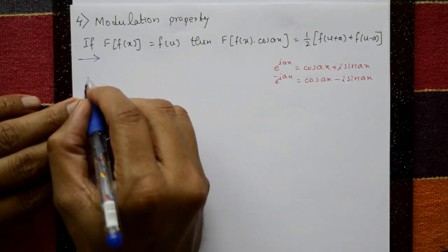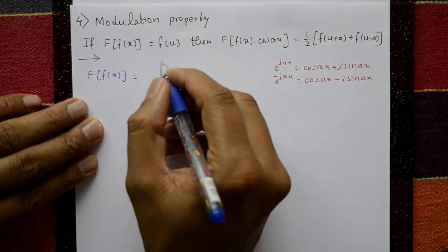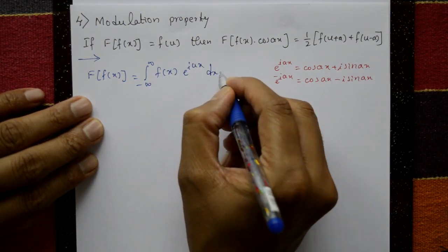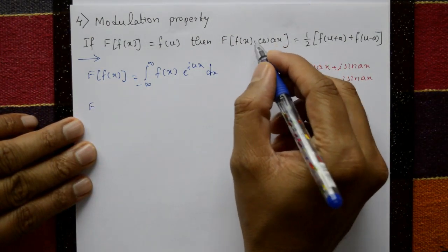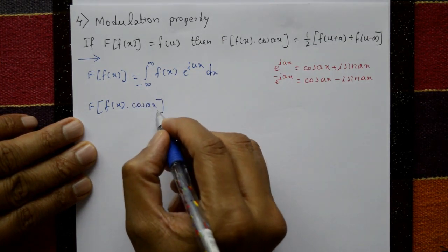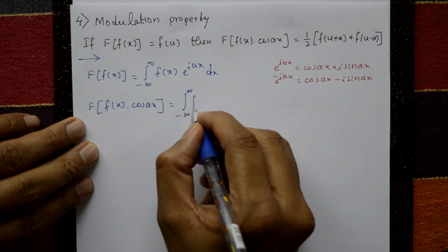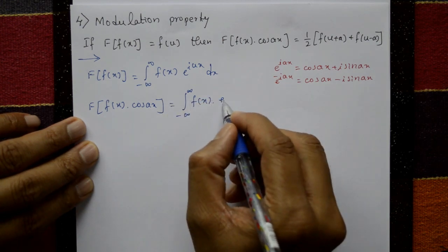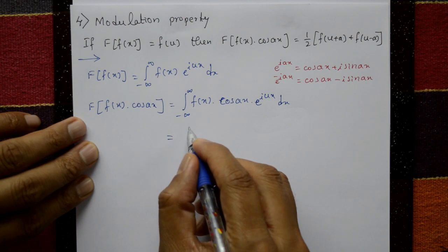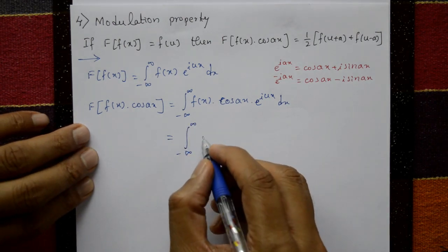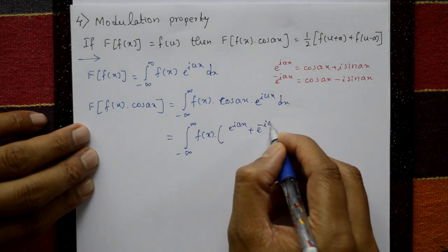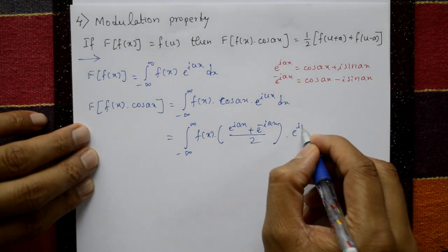Proof by definition. F of f of x equals integration from minus infinity to plus infinity of f of x times e to the power i u x with respect to x. For the left hand side with cos a x: F of f of x times cos a x equals integration from minus infinity to plus infinity of f of x times cos a x times e to the power i u x with respect to x. Now cos a x equals e to the power i a x plus e to the power minus i a x divided by 2, so this becomes integration from minus infinity to plus infinity of f of x times that expression times e to the power i u x with respect to x.